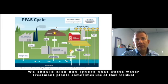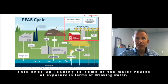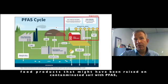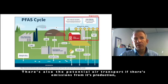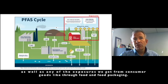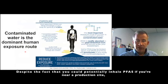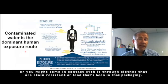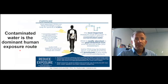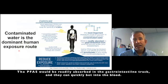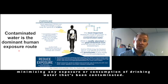Wastewater treatment plants sometimes use some of that residual sludge and give it to local farmers as a soil amendment on which crops are produced. This leads to some of the major routes of exposure in terms of drinking water and food products that might have been raised on contaminated soil or amended with those biosolids. There's also potential for air transport from emissions during production, as well as exposures through consumer goods like food packaging. Despite all these pathways, the dominant human exposure route we worry about is consumption of contaminated drinking water. PFAS are readily absorbed in the gastrointestinal tract and can quickly get into the blood, so one of the best ways to avoid exposure is minimizing consumption of contaminated drinking water.